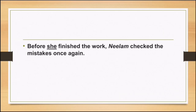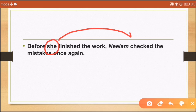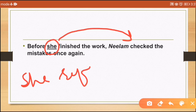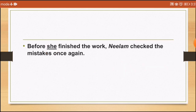Another example: 'Before she finished the work, Neelam checked the mistakes once again.' What is 'she'? She is a pronoun. Who finished the work? You go forward in the text and find that 'she' refers to Neelam. This is cataphoric reference.